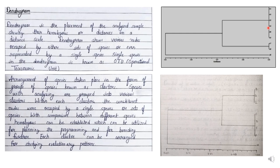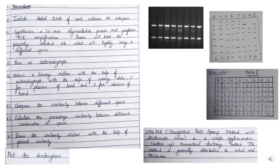Arrangement of species takes place in the form of groups known as clusters. For example, in this dendrogram, this is a cluster of three species — say BGI — and this is a cluster of four species, CDEF. Species are grouped into various clusters, and within each cluster the constituent nodes are occupied by single species or sets of species. Comparisons between species allow homologues to be established, which can be utilized for planning breeding processes, and each cluster can be arranged for studying evolutionary patterns or relationships.